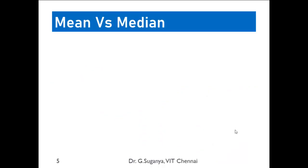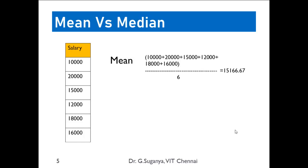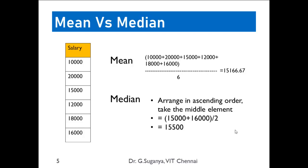Before getting into the concept, let's clearly understand what mean and median refer to. Assume we have the salaries of 6 people in an organization. To calculate the mean, we sum up all the values and divide by 6. For median, we arrange all elements in order; since the count is even, we take the middle two elements, sum them, and divide by 2 to get the median.